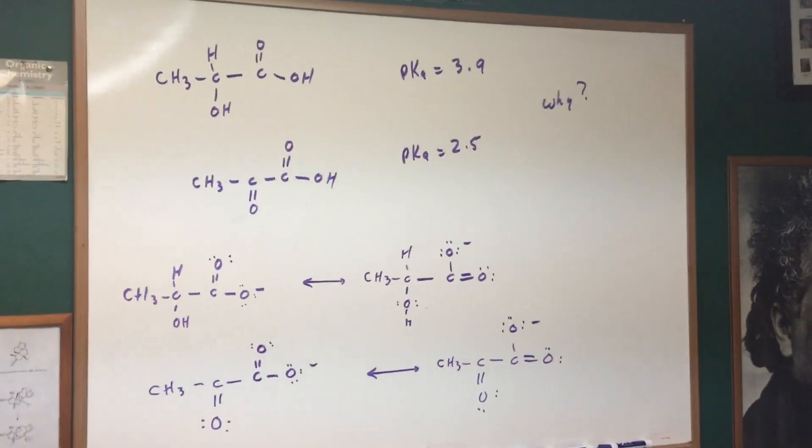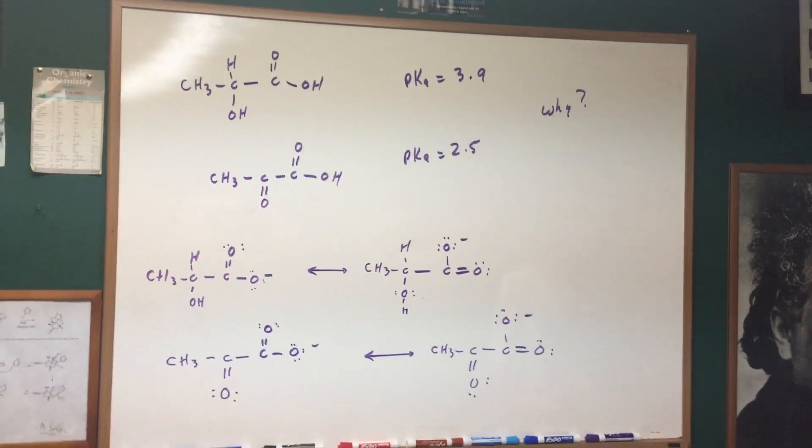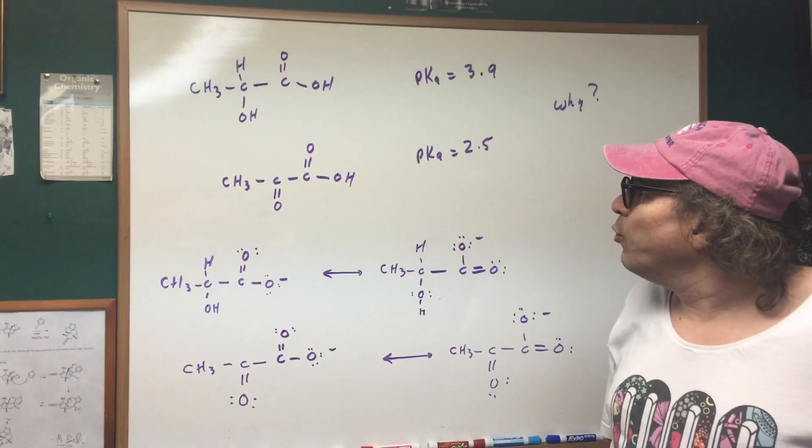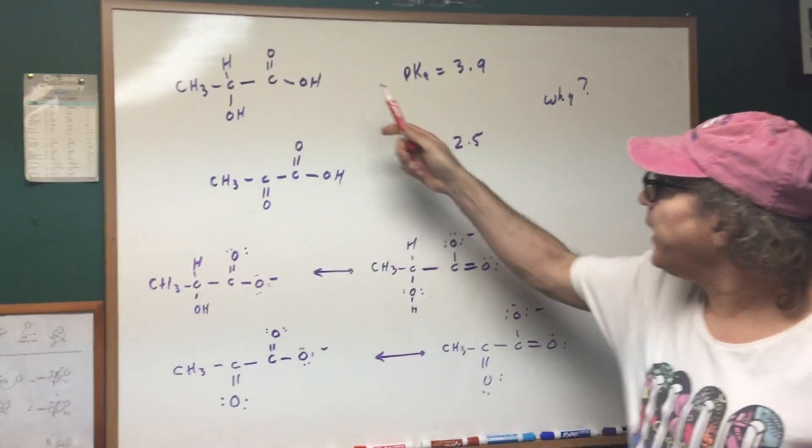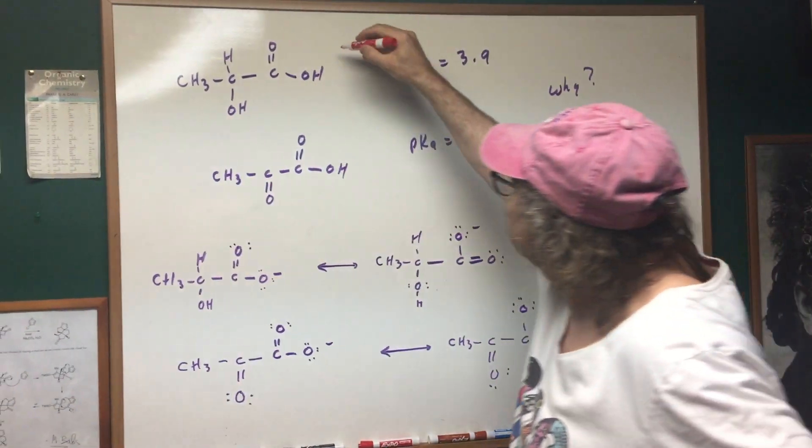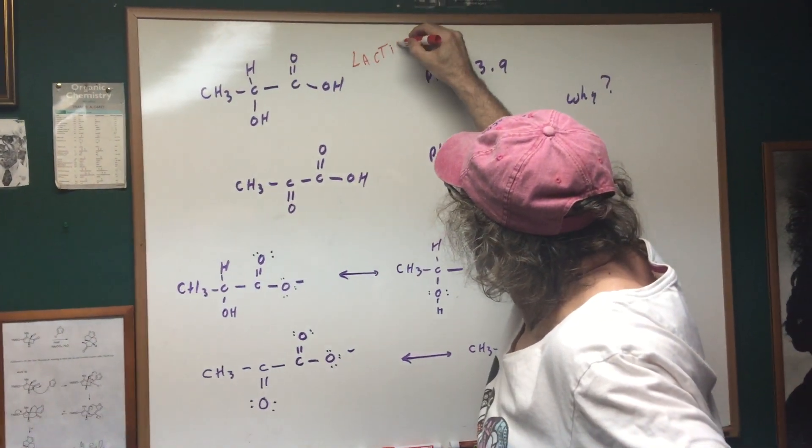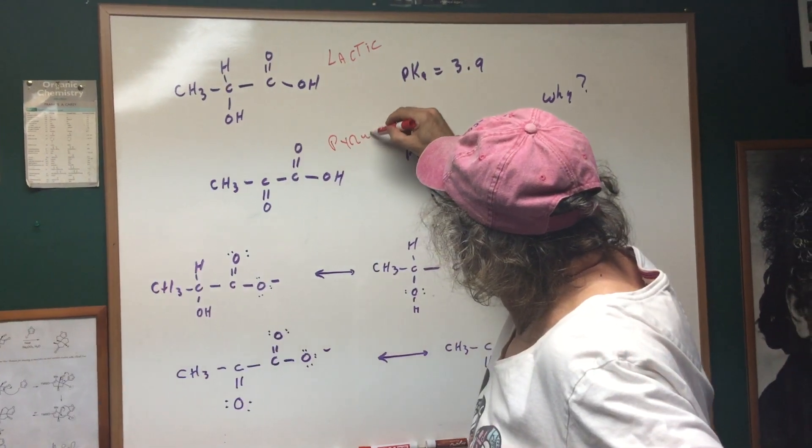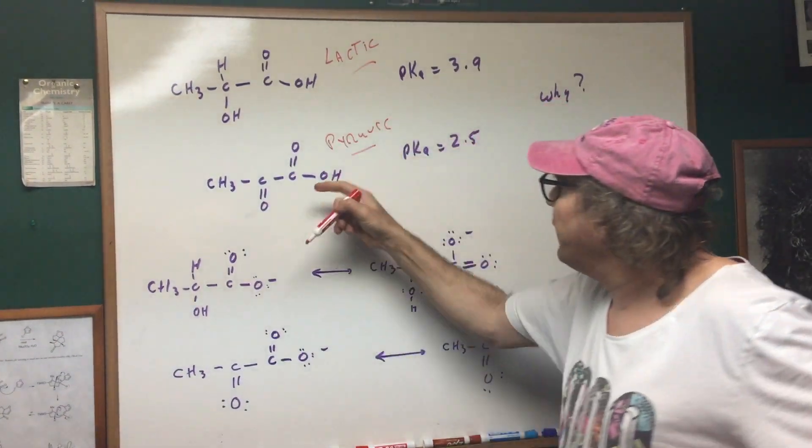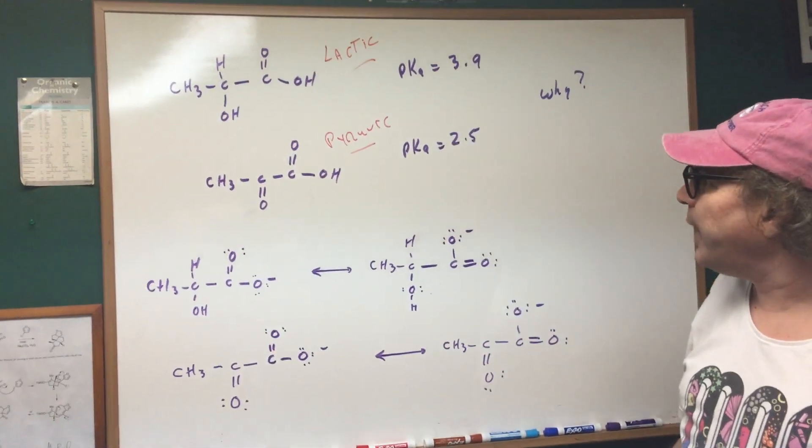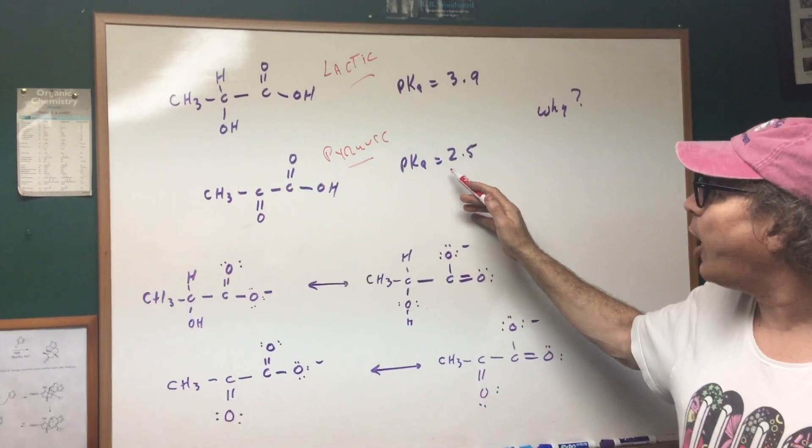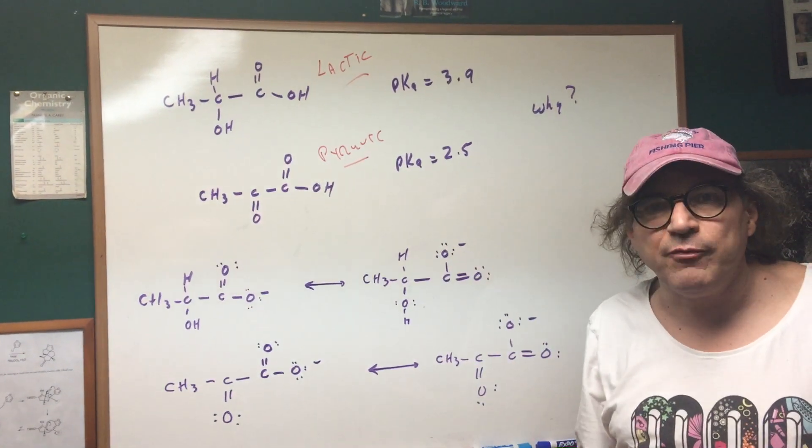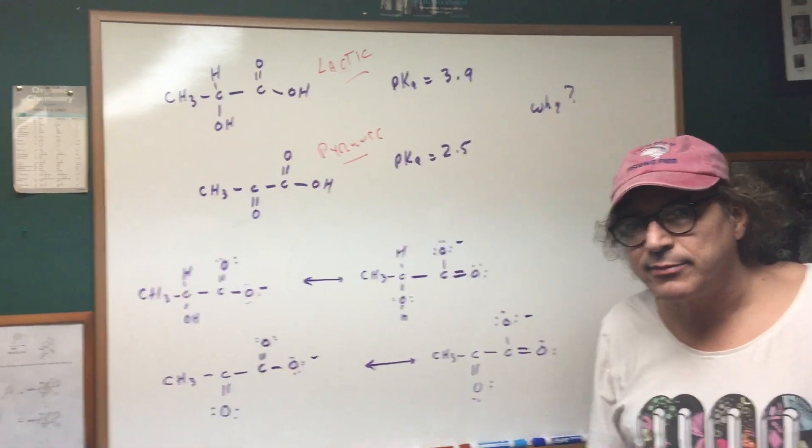Let's do one final problem that I did for you on board. What I did is the pKa of lactic acid was found to be 3.9 and the pKa of pyruvic acid would be 2.5. And I ask you why would the pKa be lower, meaning the pyruvic acid is more acidic than lactic acid.